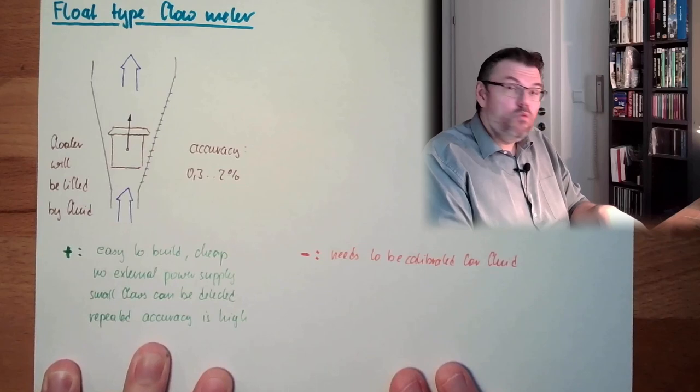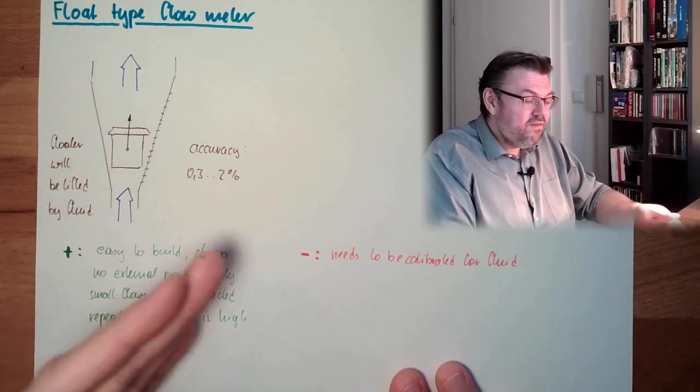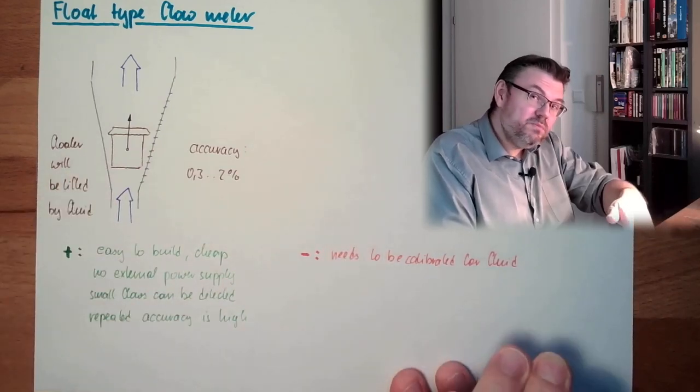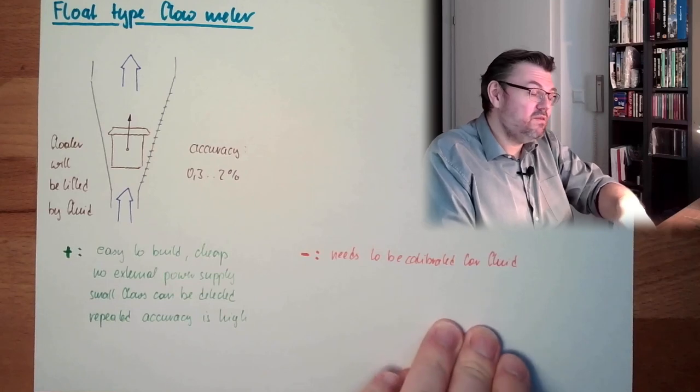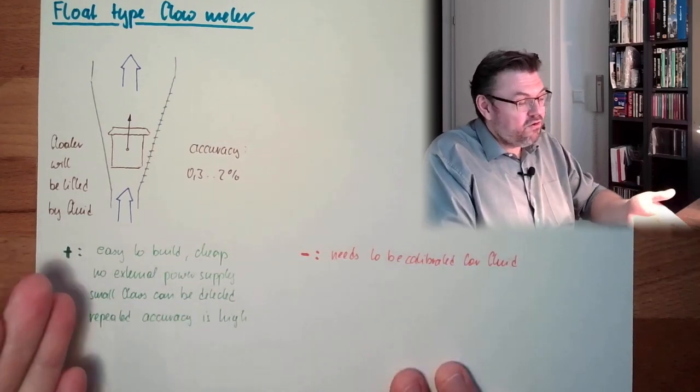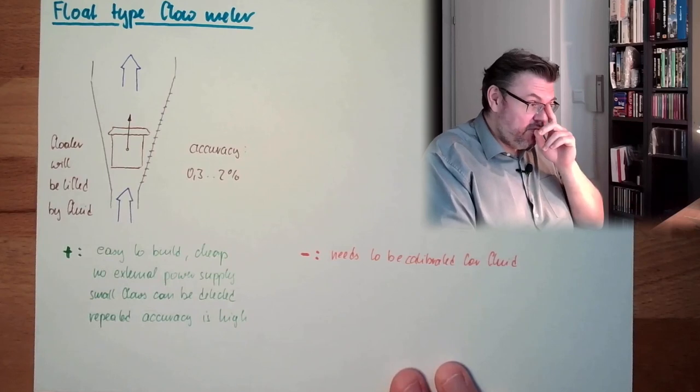However, the repeated accuracy is always high. So even if the fluid is off from the specification, from the calibrated specification, then the repeated accuracy is quite high because it's always reacting the same way.